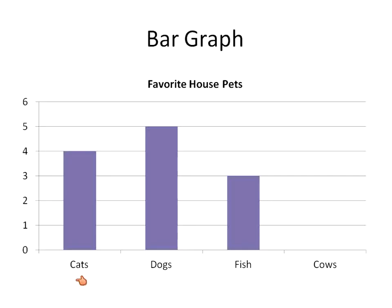What bar graphs do and what they're good for is comparing. So we compare the number of people who like cats as their favorite house pet versus the number of people who like dogs. You can ask: how many more people like dogs than cats? How many more people like dogs than fish? Or how many fewer people like cows than dogs? It's comparative data. For example, five people like dogs, three people like fish — the difference is two.